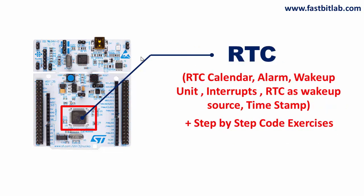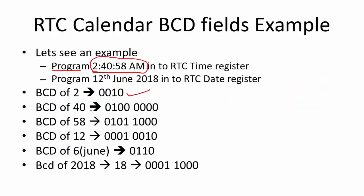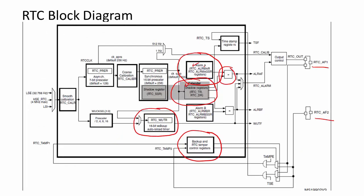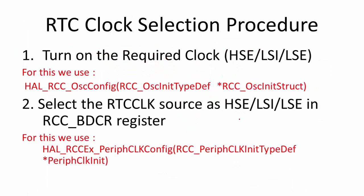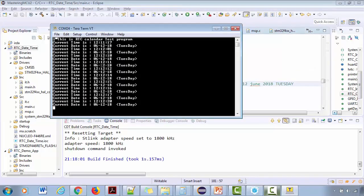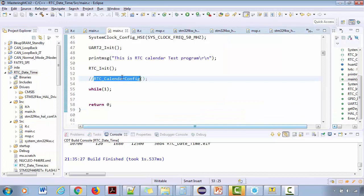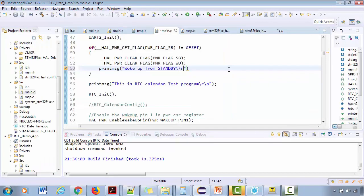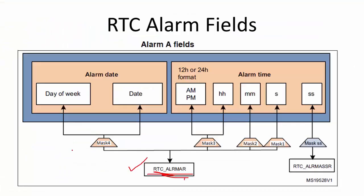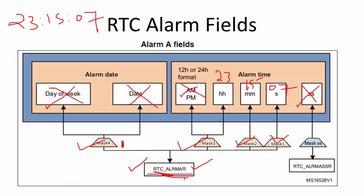After that I will cover RTC, which is a very important peripheral — almost all embedded system products will have it. RTC has multiple units: the calendar unit, alarm unit, wake-up unit, and timestamp unit. We'll explore each one through exercises, and I will also explain the relationship between RTC and the low power modes, since RTC is one of the major peripherals used to wake up the microcontroller from standby or stop mode.